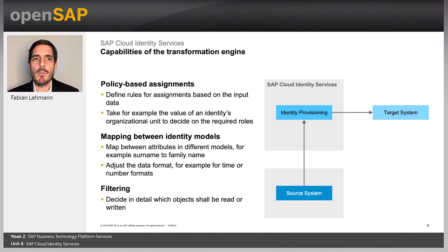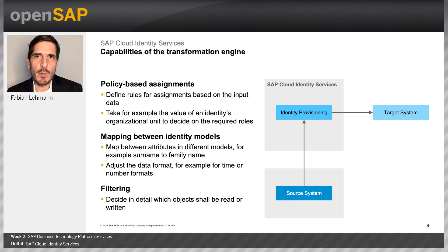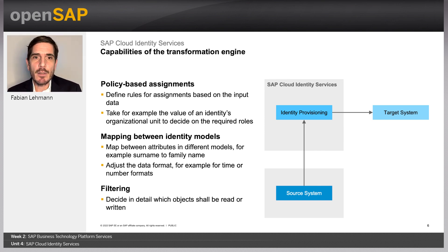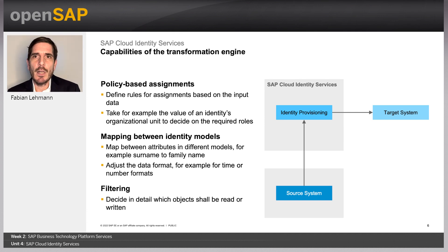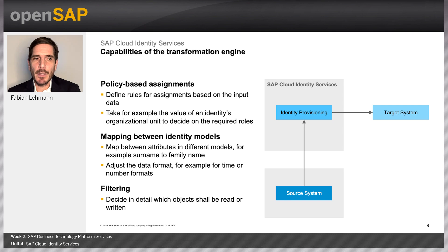Looking more in detail at identity provisioning: it reads users from a source system — for example, it can read users from a SuccessFactors system — and then replicates them via the IPS service into a FieldGlass system. It's also possible to use IAS itself as the source system, reading users stored in the IAS tenant and replicating them via IPS into, for example, Ariba.